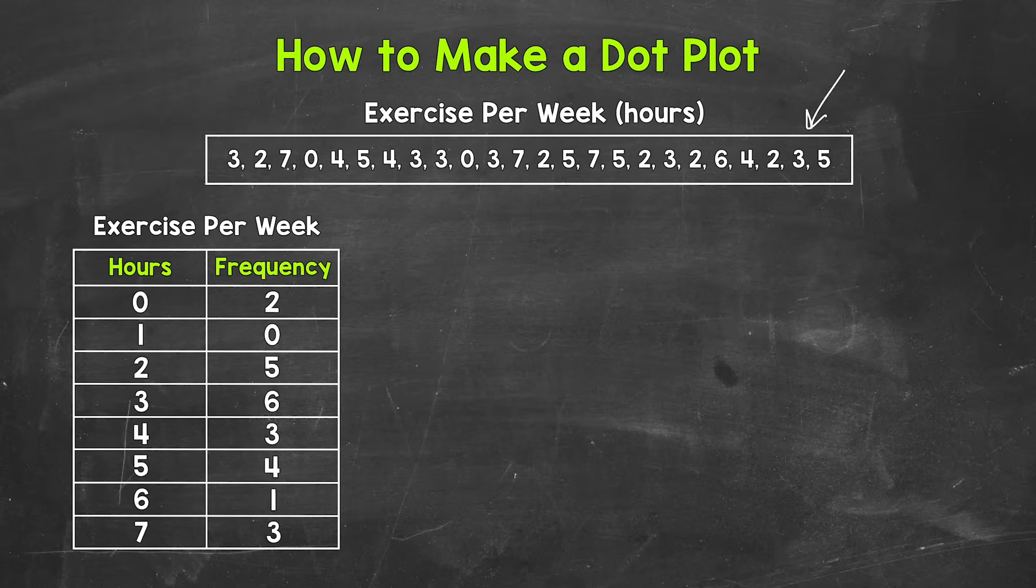Now, these numbers represent the number of hours a group of people typically exercise per week. A group of people were asked how many hours do you typically exercise per week. These are the results. The first person said three hours per week, the second person said two hours per week, and so on and so forth.